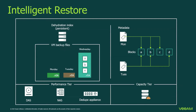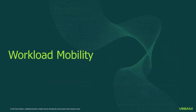With object storage integration, there is intelligence built into the recovery process. If a Wednesday backup contains blocks A, B, and D, and you need to recover Tuesday's backup, Veeam sees an overlap of blocks A and B. Veeam knows it already has blocks A and B on-premises in the performance tier, so it takes those locally and only extracts block D from the capacity tier — minimizing egress and recovery time.